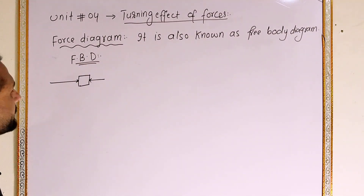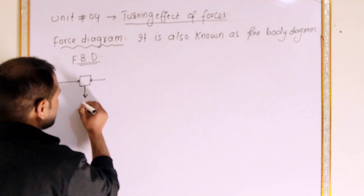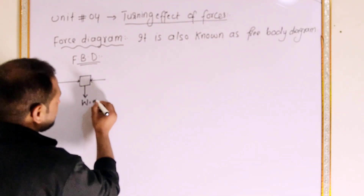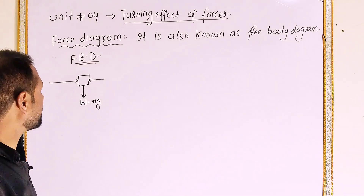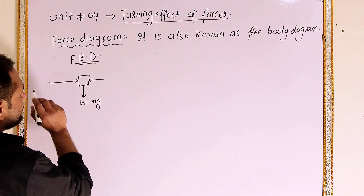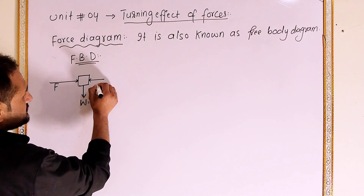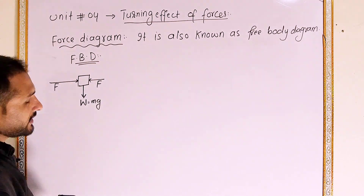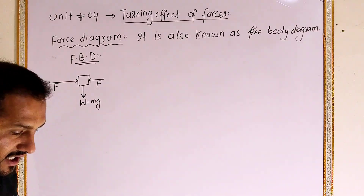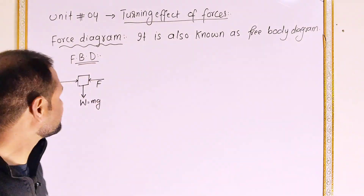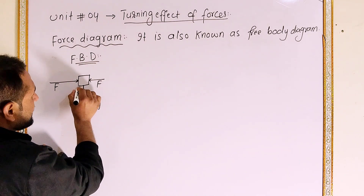If we have a single body in space, the body weight W is equal to mg. We also have the net force concept — the net force connects the forces acting on the body.